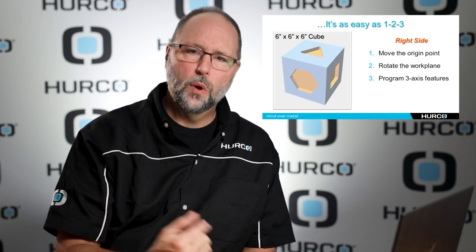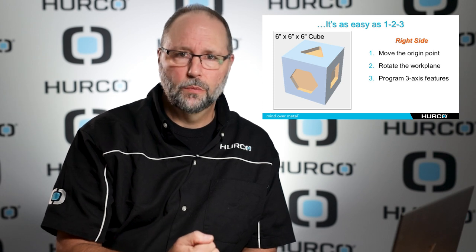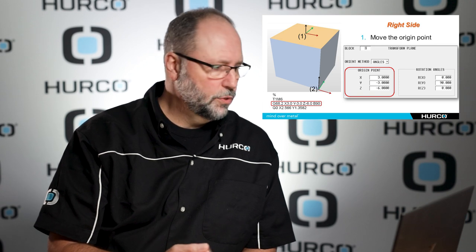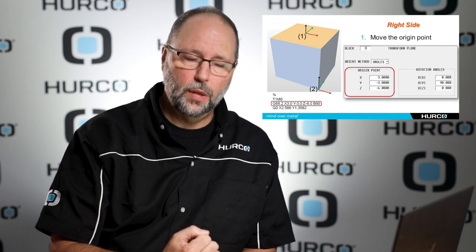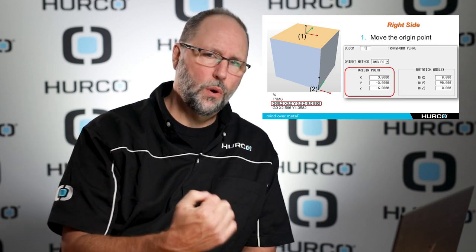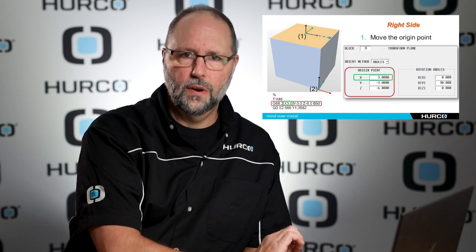So we want to do three things. Number one, we want to move the origin point temporarily — move it to a location on that side of the part that makes sense based on our print. Then we want to rotate the work plane so the tool is perpendicular to this new work plane. And then we're going to go ahead and program our features. When we're done, we'll cancel that and everything will revert back to the original part zero. We do that in either a G-code line starting out with G68.2, which is our transform plane, or a transform plane block in conversational. To move the origin point, we have a little red box around both of them, and we're going to put in dimensions of exactly how far it is from the original zero to the new zero.